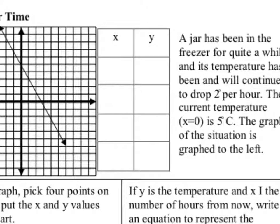So when x is equal to 0, what do we know the value of y is going to be? Looking at our real-world situation, when no time has passed, what is the temperature going to be? Here we're looking at number of hours and this is going to be our temperature. When no hours have passed, what's the temperature going to be? Looking at the real-world situation — here it tells us when x is equal to 0, the current temperature is 5 degrees.